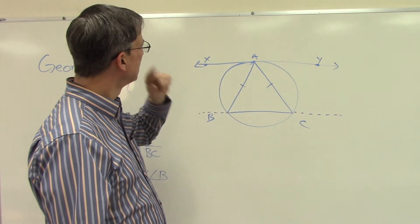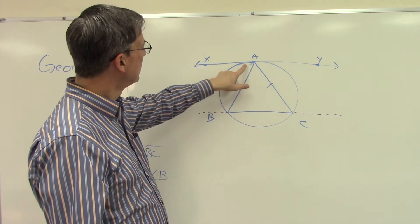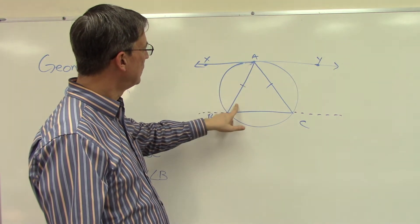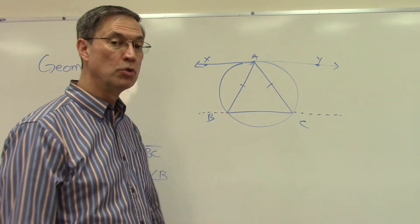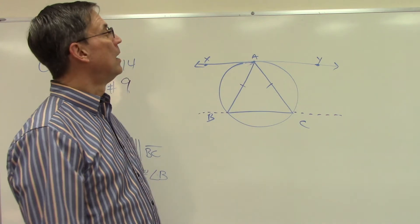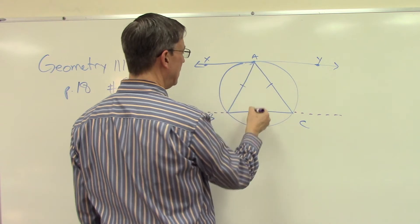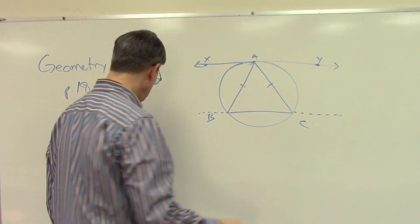Remember back in a previous video on page 10, we started with parallel lines, and we noticed that the alternate interior angles, if they're congruent, prove that they're parallel lines. Or if they're parallel lines, we can say that the alternate interior angles are congruent.